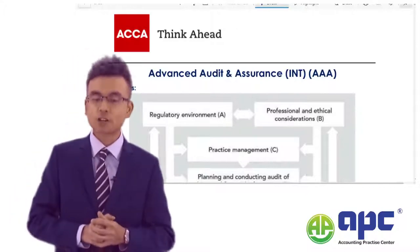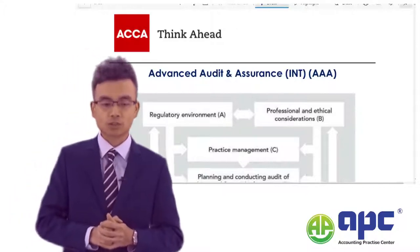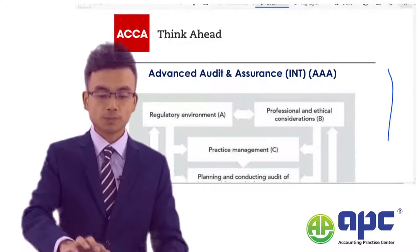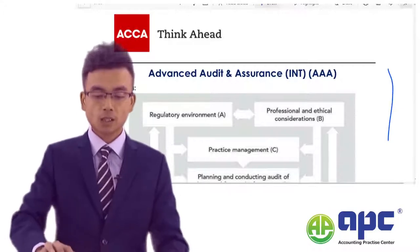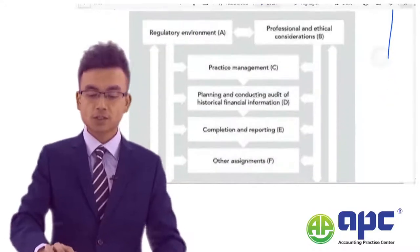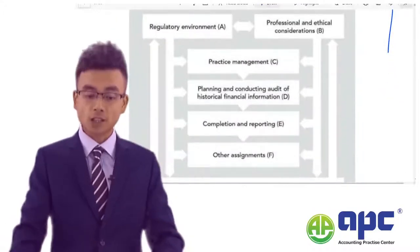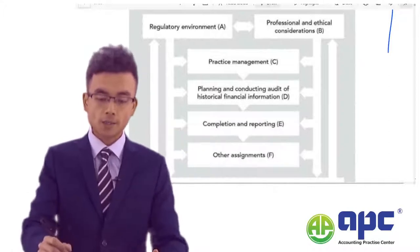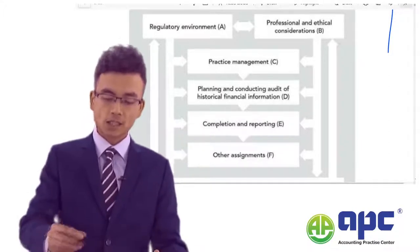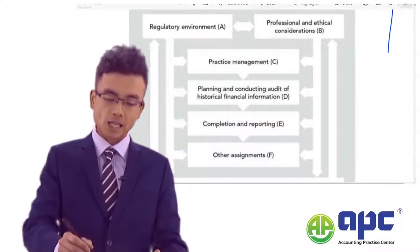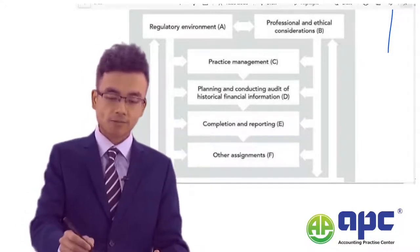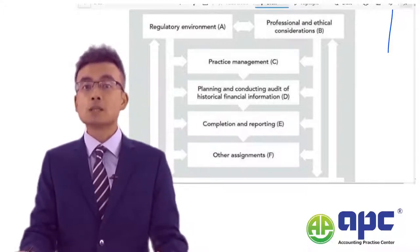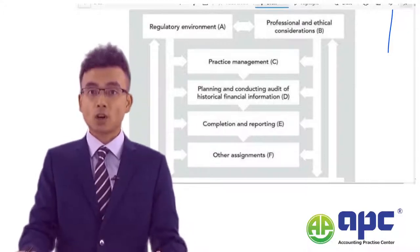Now, Advanced Audit and Assurance — let's look at the syllabus first. The syllabus is divided into parts A, B, C, D, E, and F. Let's see what each of them means in turn.